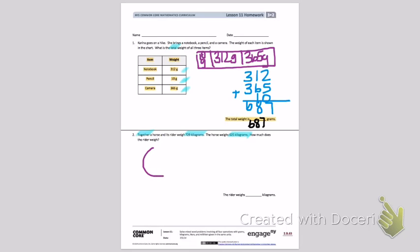So I know my total is 729 kilograms. I know the horse is 625 kilograms. I don't know how much the rider, the person riding the horse, is. I'm waiting for that circle to pop up on your page for you. It's coming up quite slowly today.